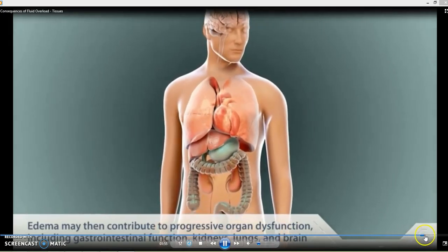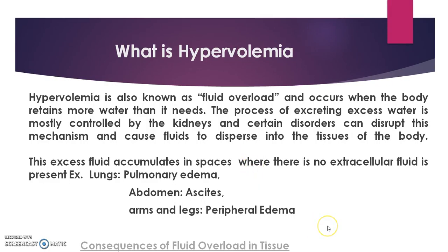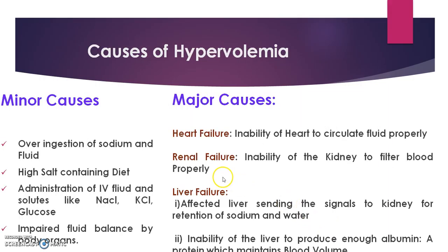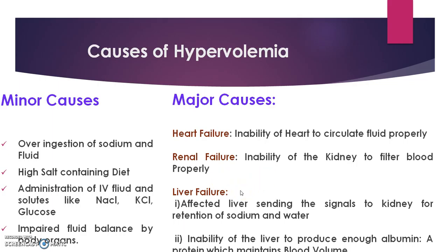The person starts suffering from blood pressure, and it affects all our body organs including extremities, kidney, heart, liver, and all body organs. There are various reasons leading to hypervolemia: increased sodium consumption causes hypervolemia; high salt-containing diet like fast food can lead to hypervolemia; injectables like saline can lead to hypervolemia; and if the body's fluid balance is affected, that too is a reason. Major causes include heart failure, renal failure, and liver failure, as all these major organs handle body fluid.